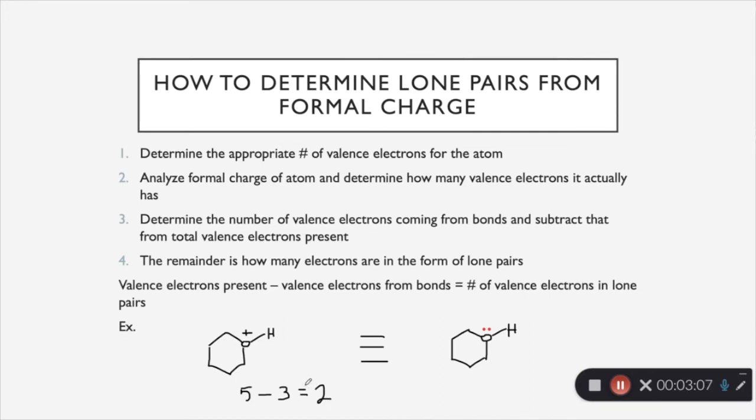So in this case there are two electrons that are not bonded and so that will give us one total lone pair. Remember, this is going to be the number of electrons, not the number of lone pairs.